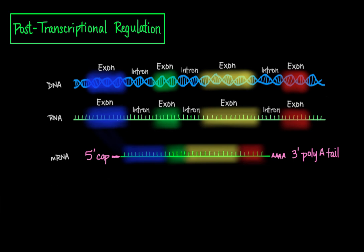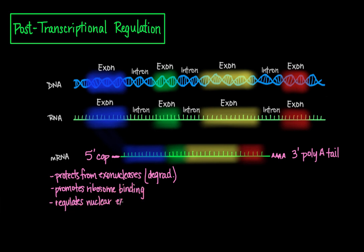And capping at the 5' end converts this end of the mRNA to a 3' end by a 5' to 5' linkage, which basically just protects the mRNA from exonucleases, which degrade foreign RNA. The cap also promotes ribosomal binding for translation, and also helps the regulation of nuclear export of the mRNA.